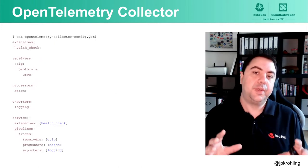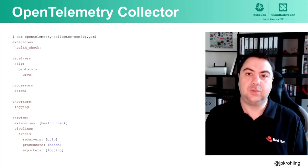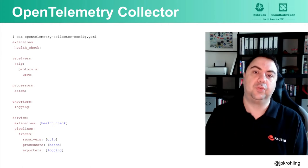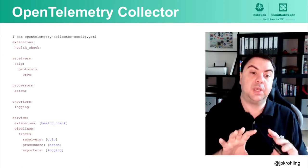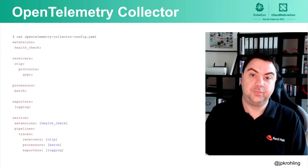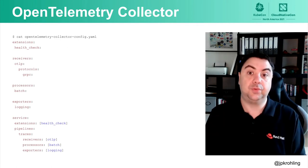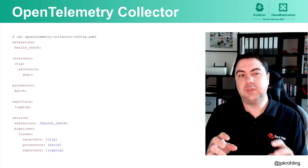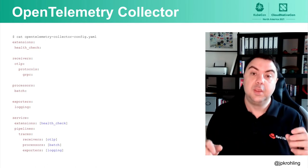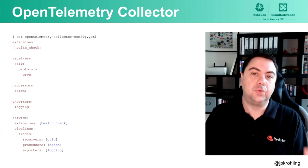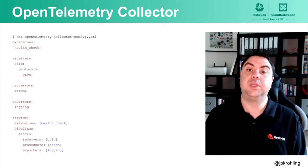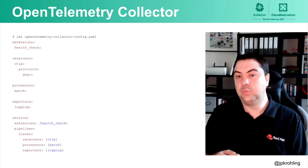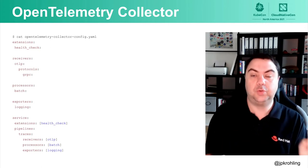This is how a configuration file looks for the collector. We have sections for extensions, receivers, processors, and exporters. We tie them all together under the service node, where we specify the extensions for the process and define the pipelines. Pipelines can be for traces, metrics, and logs, and we can even have multiple pipelines for the same data type. In our example, we have one receiver, one processor, and one exporter.